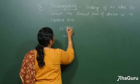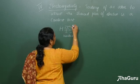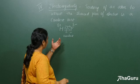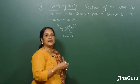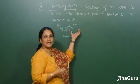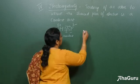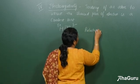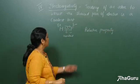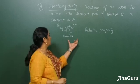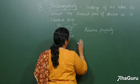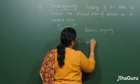This electron will be pulled slightly by the fluorine, so as a result fluorine will have a partial negative charge and hydrogen will have a partial positive charge. One more thing to remember: electronegativity is only a relative property. When we compare H and F, fluorine is more electronegative than hydrogen. It does not have any absolute value, so there are no units for electronegativity.